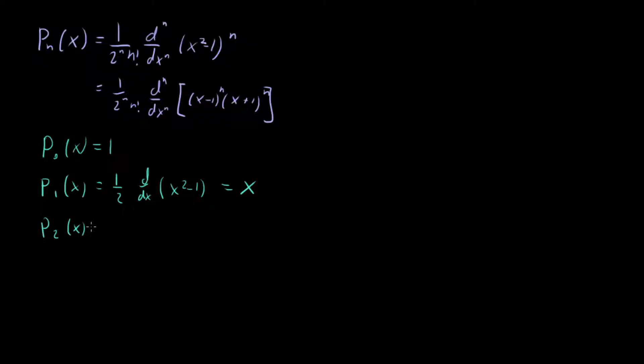P_2 of x. Now things get a little interesting. When we do this, we're going to have 1 over 2^2, 2 factorial, so 2 cubed. And then we're going to have the second derivative of (x^2 - 1)^2. So what happens here?